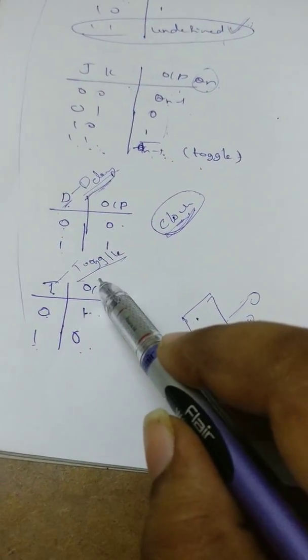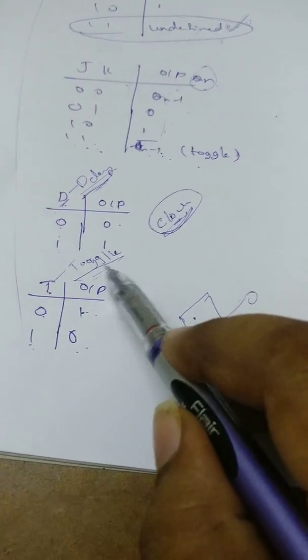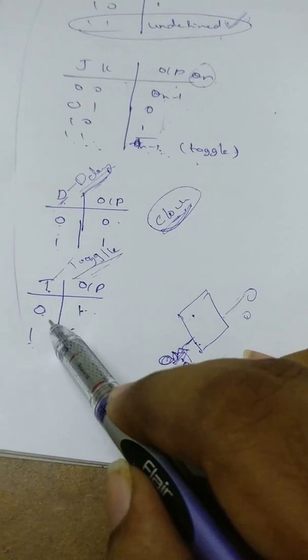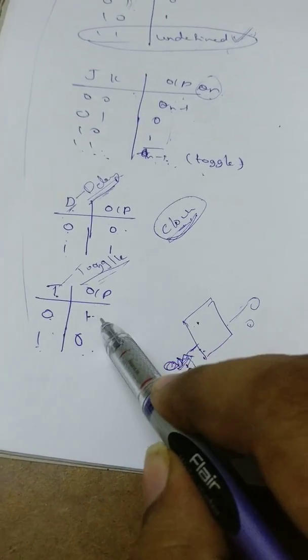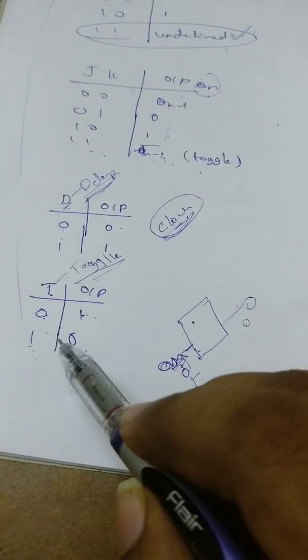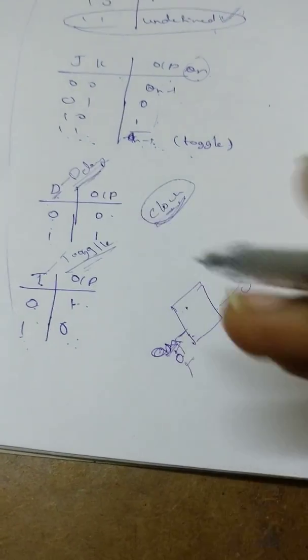Coming to the T flip-flop, T stands for toggle. Toggle means inverting. So output will be inverted to the input. If input is 0, output will be 1. Input is 1, output will be 0. By this way, you can remember truth tables of flip-flops.